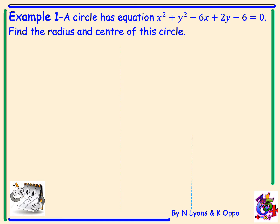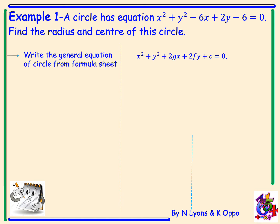Example 1. A circle has equation x squared plus y squared minus 6x plus 2y minus 6 equals 0. Find the radius and centre of this circle. First of all we will write down the general equation of the circle from our formula sheet, then write our equation from the question.